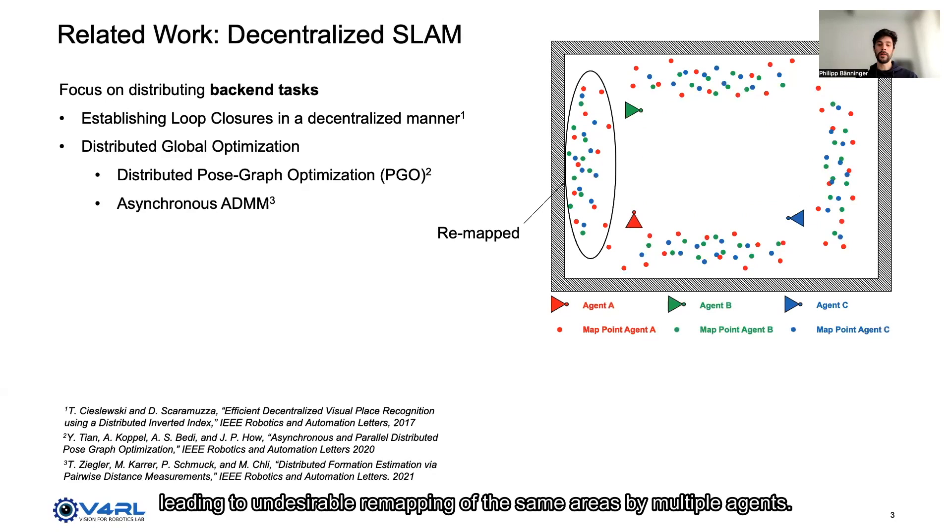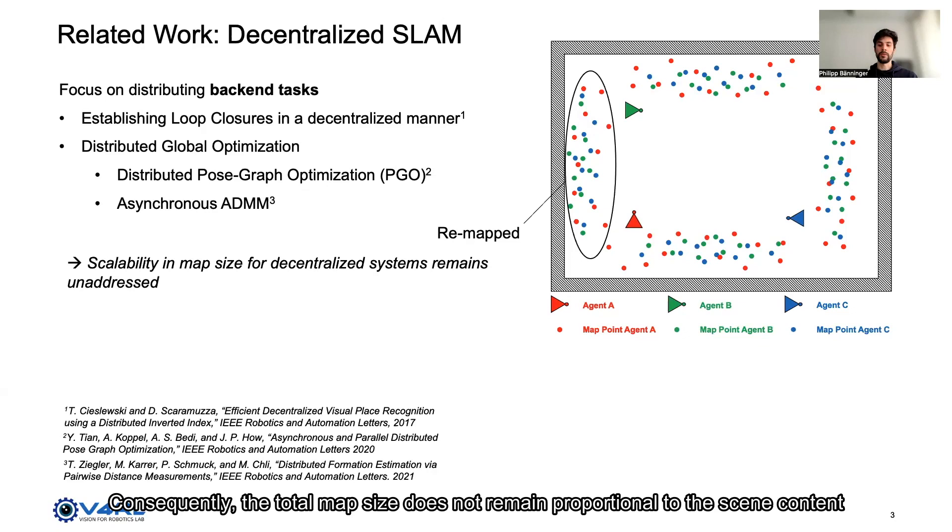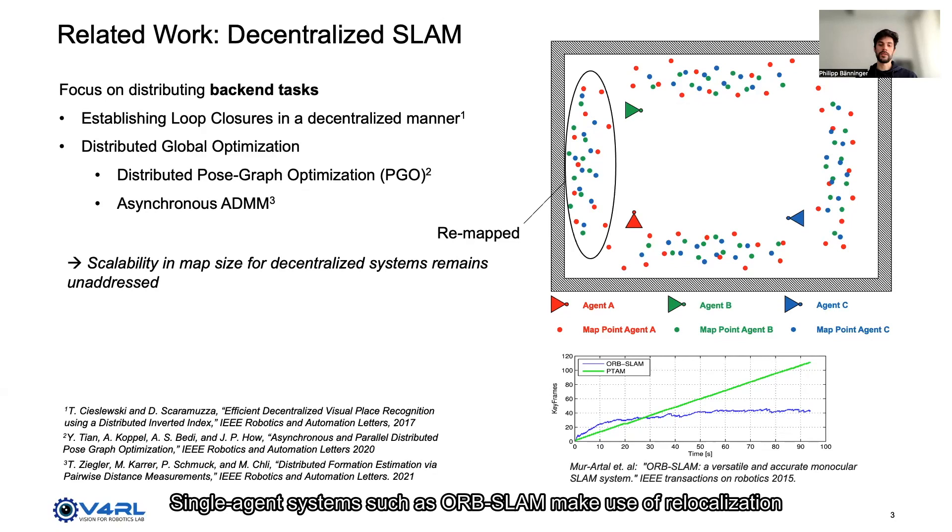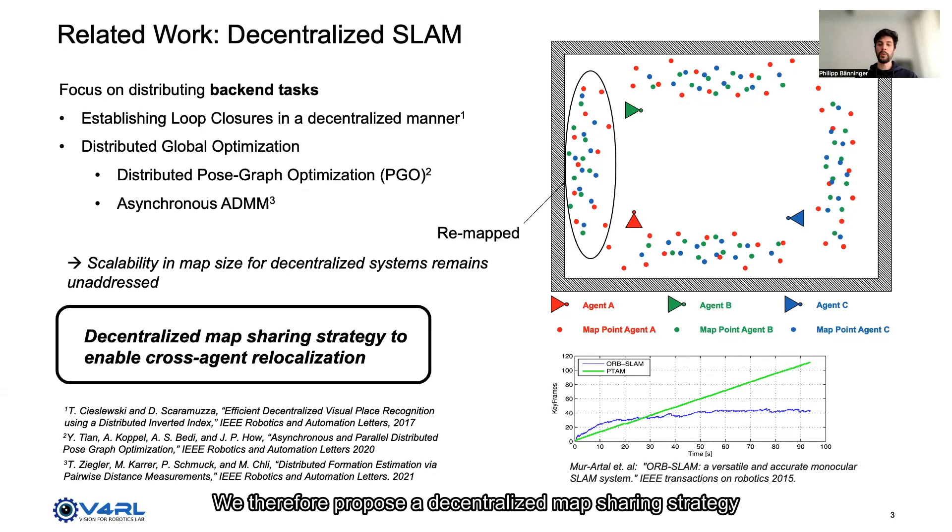Consequently, the total map size does not remain proportional to the scene content and scalability in map size remains unaddressed. Single agent systems such as ORB-SLAM make use of relocalization to produce a map whose size remains proportional to the scene content. We therefore propose a decentralized map sharing strategy to enable agents to relocalize in each other's maps and so avoid undesirable map duplication.